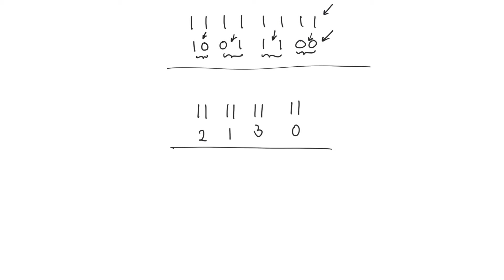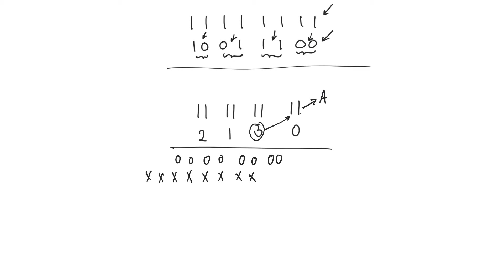Now we have zero multiplying the multiplicand — let's call it A — giving all zeros. Then three multiplied by the multiplicand, but instead of shifting one bit to the left, we shift two bits to the left because we have a base-four multiplier. So we multiply three by the whole multiplicand, producing partial products. Then one times the multiplicand, shifted two bits to the left, and two times the multiplicand, also shifted two bits to the left.